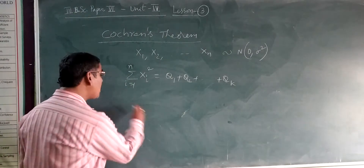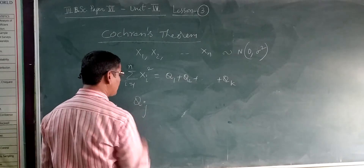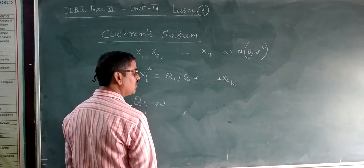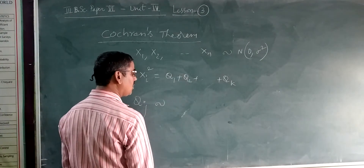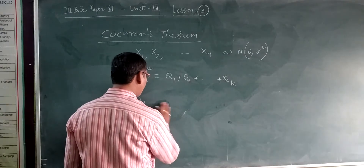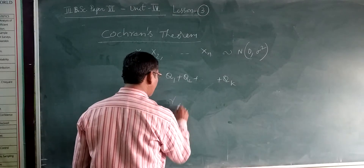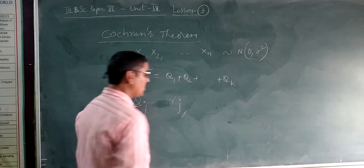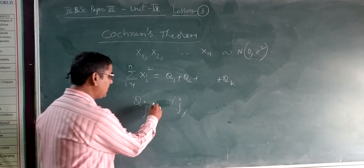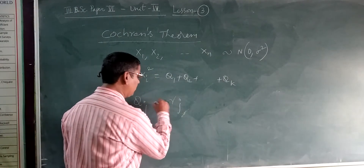Where QJ is a quadratic form with rank RJ. That is, QJ is a quadratic form which has rank RJ.